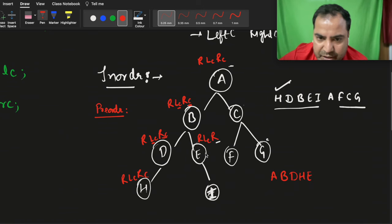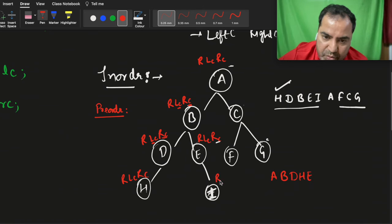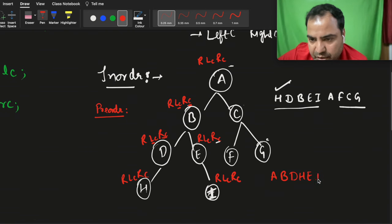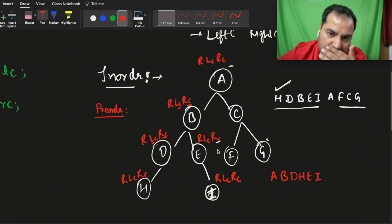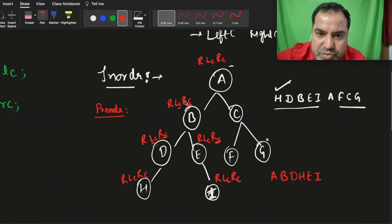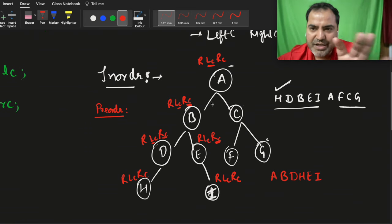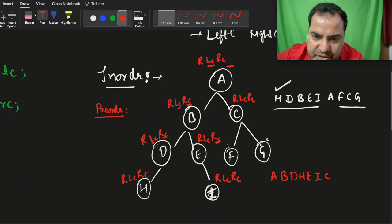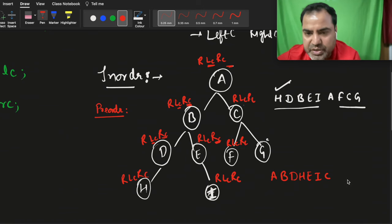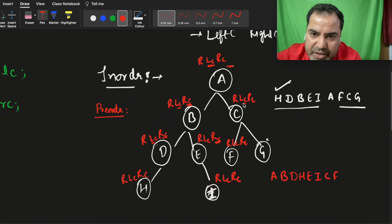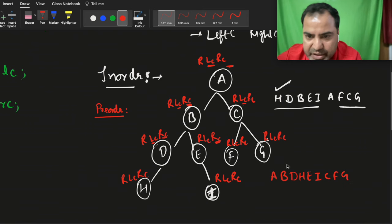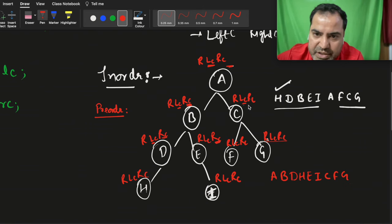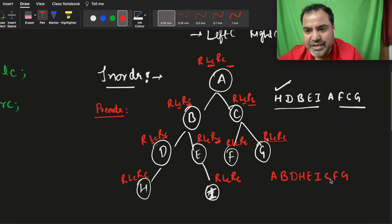Root, left child, right child — root is e, it prints. Left child is nothing, right child has something: root, left child, right child — root is i, so i prints. This right child call is finished, so the left child call is also finished — these are all recursive calls. Now the right child call: root, left child, right child — root is c, it prints. Then left child call: root, left child, right child — root is f, no left or right child, so f prints. Right child: root, left child, right child — g prints. This call is finished.